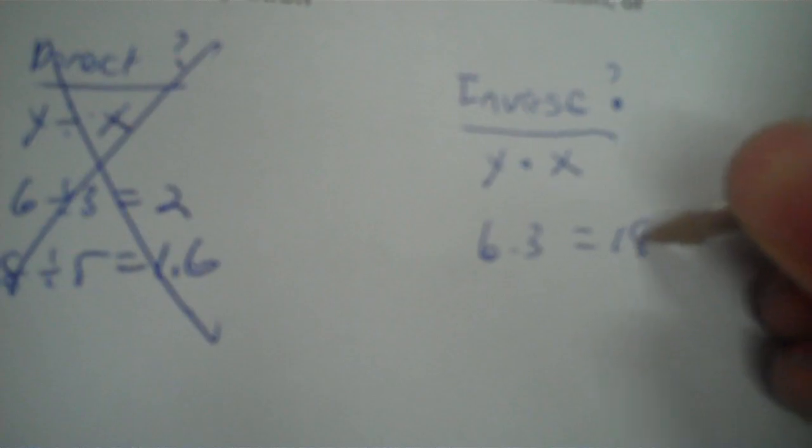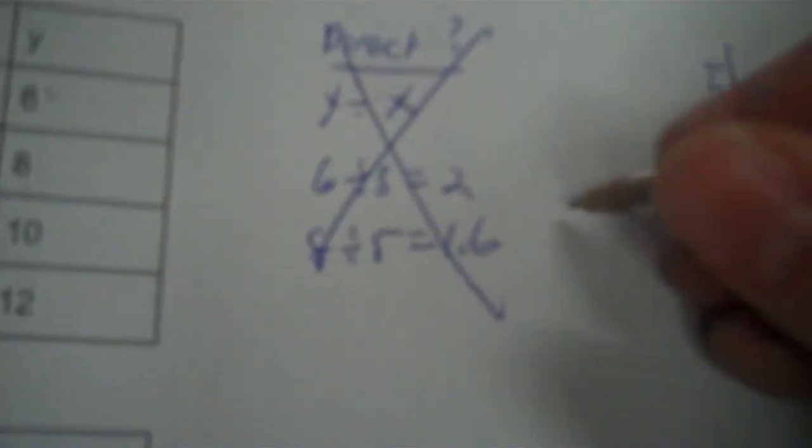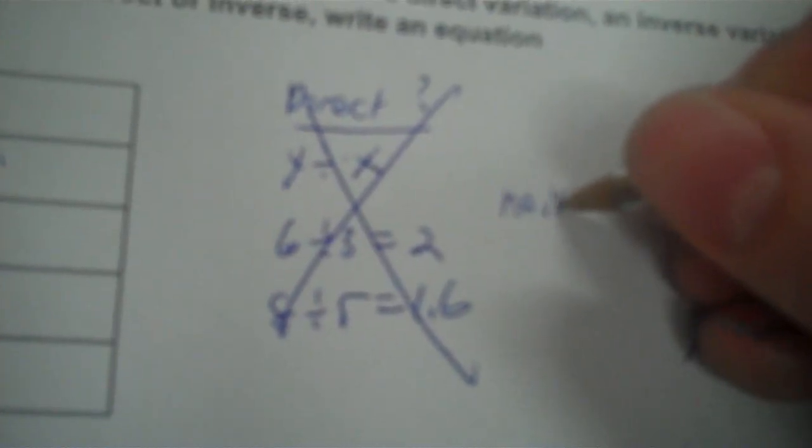Now inverse, y times x, so 6 times 3 is 18. 8 times 5 is 40, so it can't be either. So you just write neither, easy enough. Okay, next one, direct or inverse.